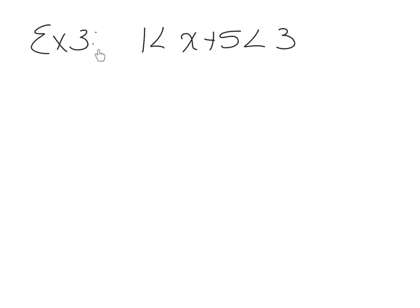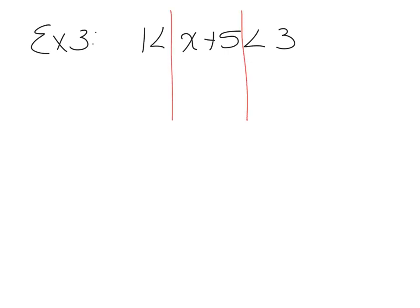Example 3 is on page 8: 1 is less than x plus 5 is less than 3. This is the first time we've seen a compound inequality written with two symbols together — it's the same as saying AND. It's like saying 1 is less than x plus 5 AND x plus 5 is less than 3; it's just a compact way to write it. You can separate it into two AND statements, or solve it all together.